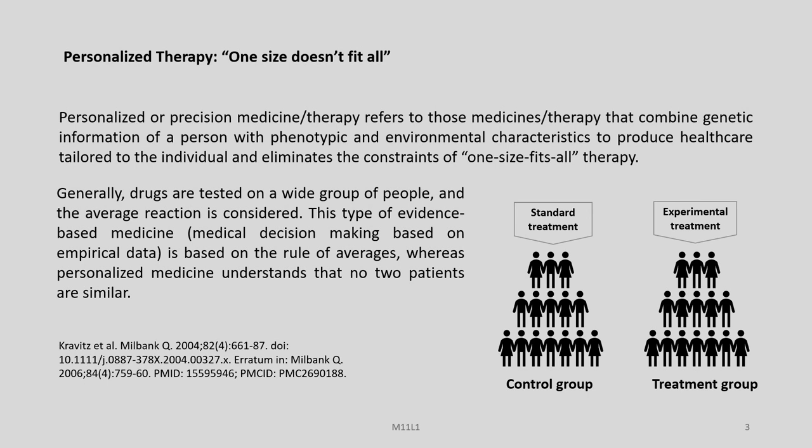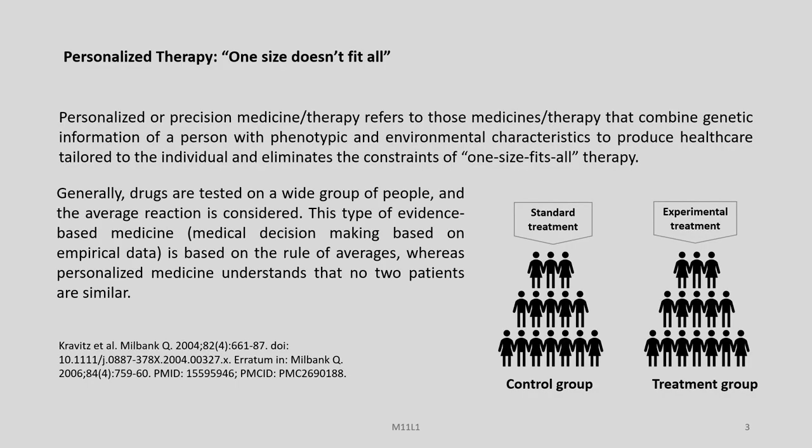In simple terms, our genotype determines our phenotype and our disease conditions are also governed by genotypes to a large extent in conjunction with the environment. So the therapies also have to be tailored to fit into such a landscape. Generally, drugs are tested on a wide group of people and the average reaction is considered in the drug development process. This type of evidence-based medicine, where medical decision-making is done based on empirical data, is based on the rule of averages.